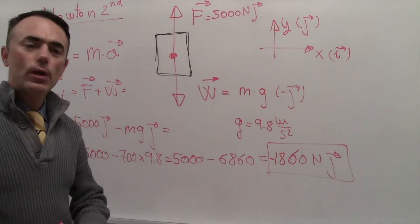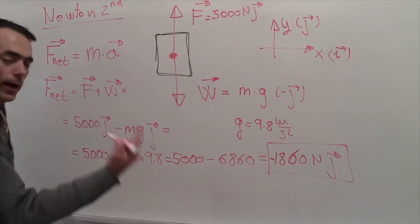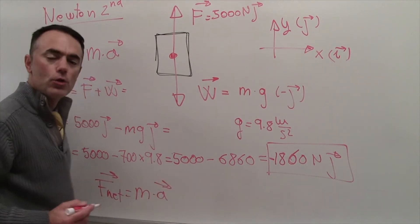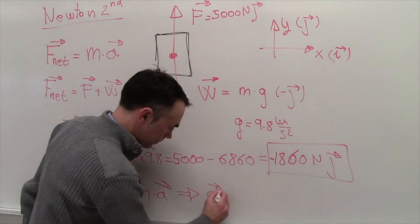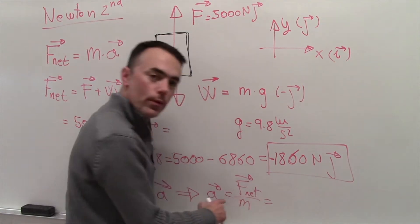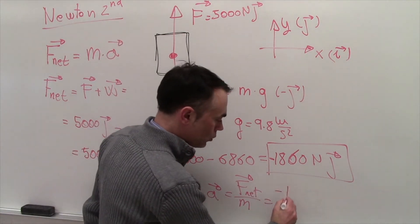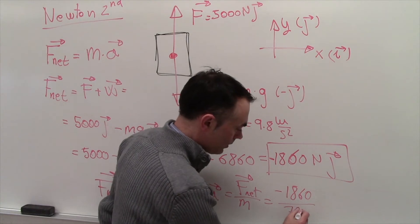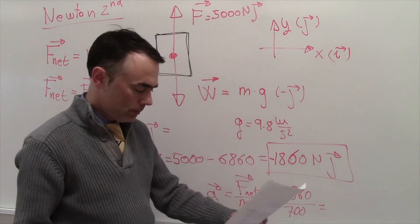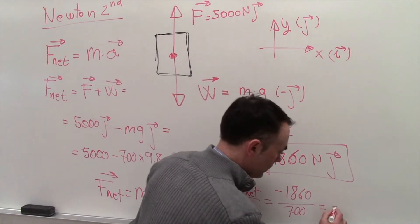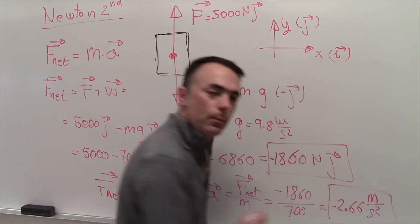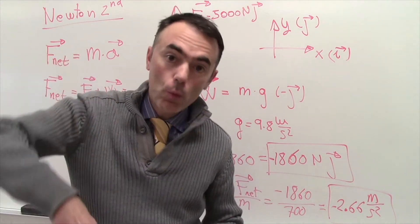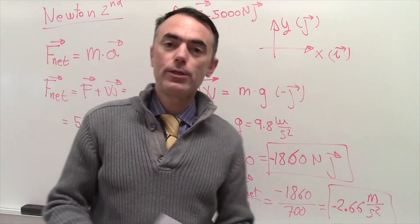Now I want to calculate the acceleration, so I use Newton's second law and solve for a. The net force is minus 1,860 N and the mass is 700 kg, which gives minus 2.66 meters per second squared. So the elevator is accelerating downwards with this acceleration.